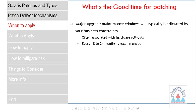What is the right time for Solaris patching? Major OS upgrade and maintenance windows are typically dictated by business constraints and are not the same for all customers. Most companies often associate major upgrade tasks with hardware rollouts. Oracle's recommended strategy is to schedule major Solaris upgrade activities every 18 to 24 months.